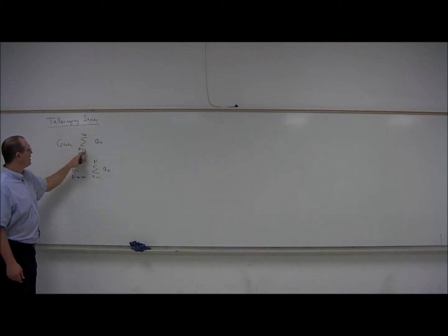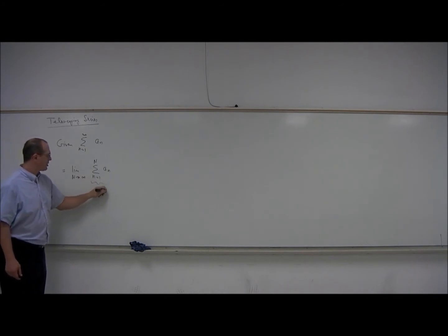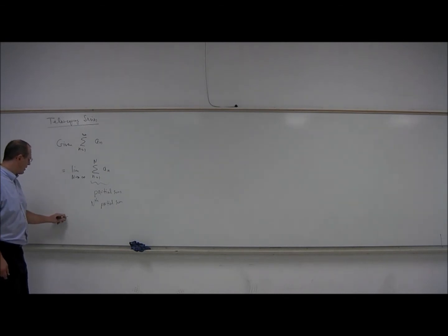So this infinite sum is really a limit, and these finite sums are called partial sums. So this is the capital Nth partial sum. Another way to write this is the limit as n goes to infinity of S sub capital N for the nth partial sum. Now in a particular type of series called a telescoping series, it's possible to get a nice formula for S sub n, and then we'll be able to take the limit of that formula as capital N goes to infinity.